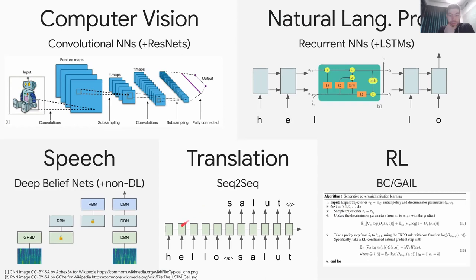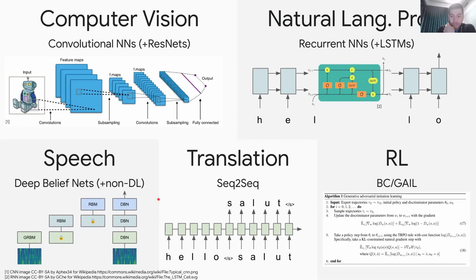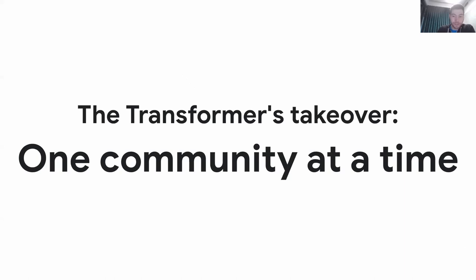For translation, you process input similarly but generate output one piece after another. In speech, there was another family — deep belief nets based on restricted Boltzmann machines, trained in an autoencoder way layer by layer. In RL, it was even more the wild west, with everybody coming up with their own custom architecture, usually a small ResNet or something similar, but no common ground at all.